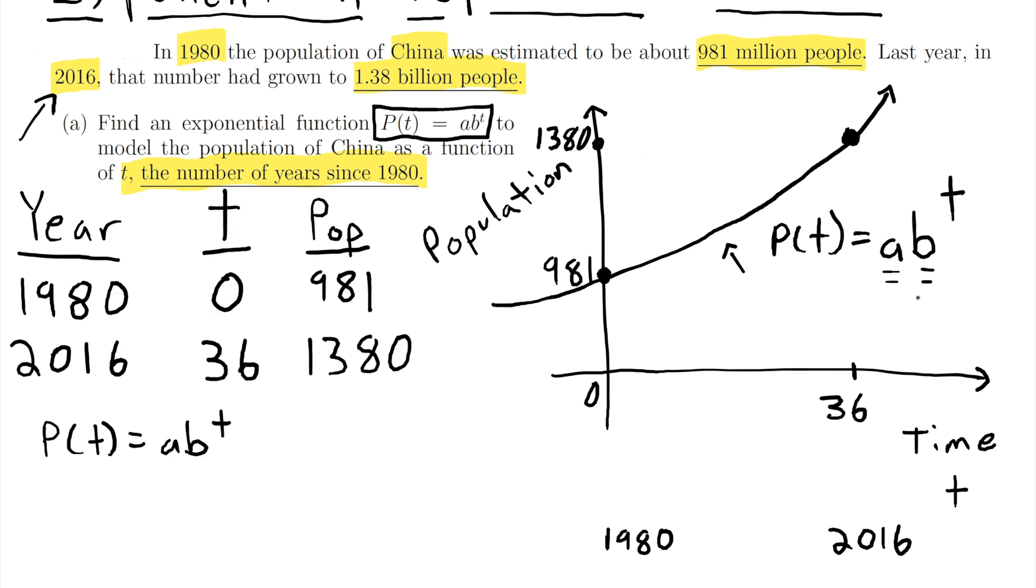So the first thing that's important to remember is that the a in an exponential equation is the initial value. It's always the y-intercept. It's the starting amount. And so for this problem since we're starting in the year 1980 our a is going to be the population in the year 1980. It's going to be 981. So that's a big help.